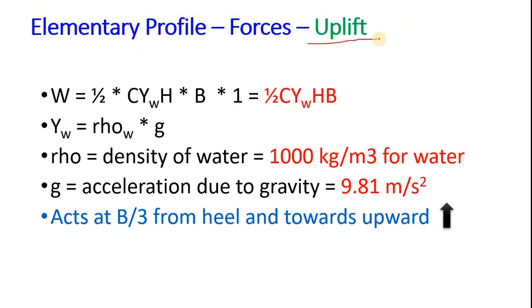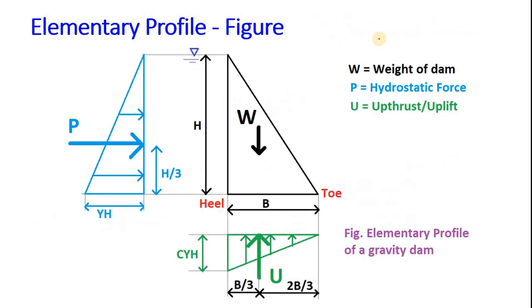Now let's calculate uplift pressure. In the similar manner we have to calculate the uplift pressure. The pressure at this point, that is heel point, is gamma into c into H. And this c is coefficient which ranges from 0 to 1. And at this point pressure is 0. So uplift pressure is triangular here. Also the force due to uplift pressure is 1 by 2 into base into height, area of the triangle and unit length into the paper. So we will get c gamma h into b and unit length 1. 1 by 2 c gamma hb.